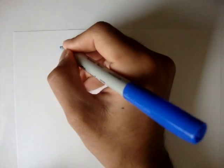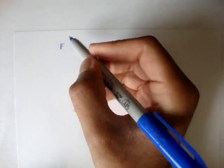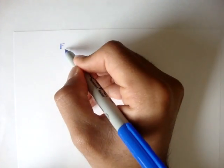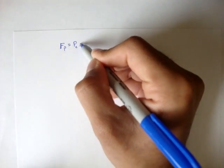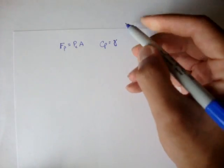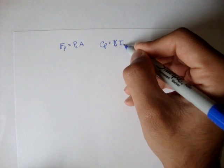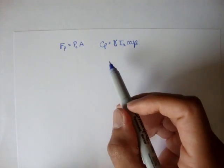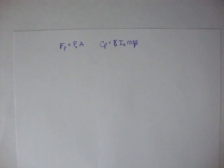Let's talk about forces on curved surfaces. We've been talking about forces on planar or straight surfaces. The equations we use to analyze forces on planar surfaces are Fp equals Pa, and Cp equals gamma times I-sub-x times the cosine of beta. But these two formulas are only used for flat surfaces — we can only use them for flat surfaces. But what if we have a curved surface?